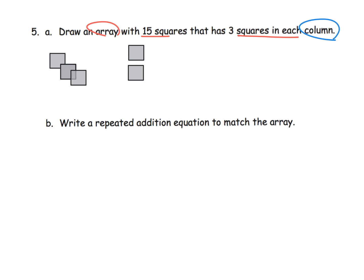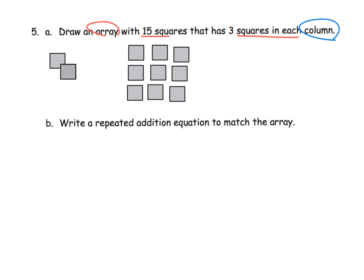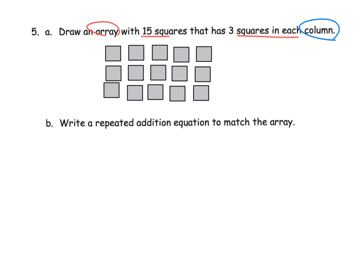We are being asked to create an array with three squares in each column. There are three squares in one column, and we're just going to keep going — column by column by column — until we have our array of 15 squares, three squares in each column. If we wanted to, we could say three plus three plus three plus three plus three, and adding all those threes would indeed give us 15.